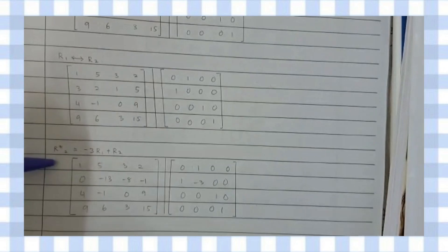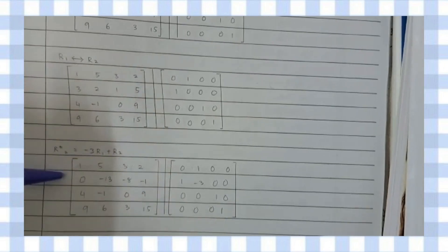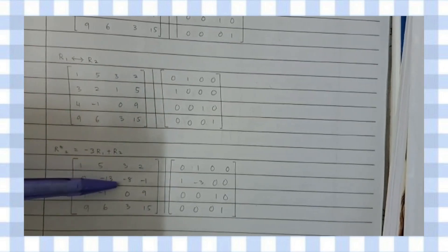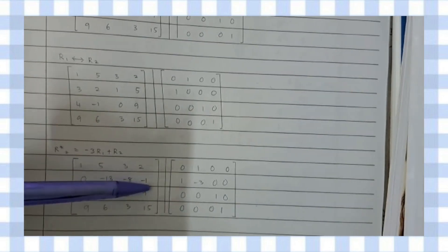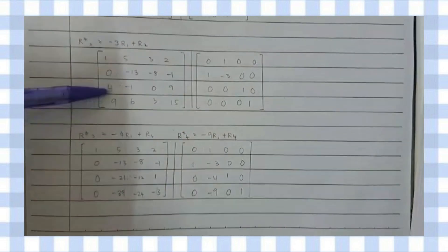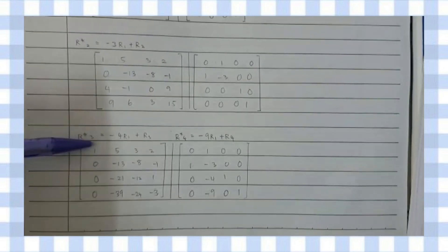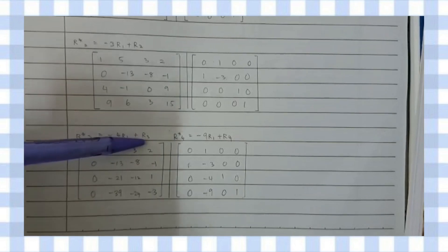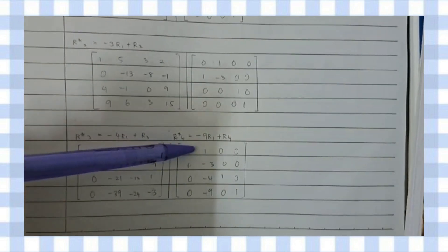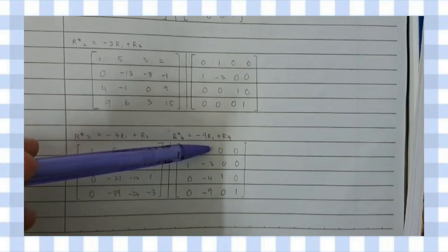For the second step, we change this 3 to become zero. The new R2 is obtained by multiplying negative 3 with R1 and adding R2, giving zero, negative 3, zero, negative 1, 1, negative 3, zero, and zero. For the third step, we change the 4 and 9 to become zero. The new R3 is negative 4 times R1 plus R3, and the new R4 is negative 9 times R1 plus R4.